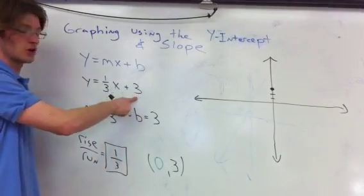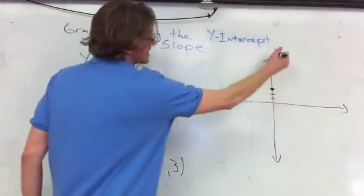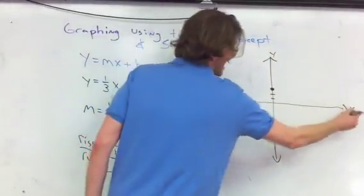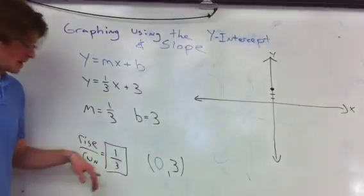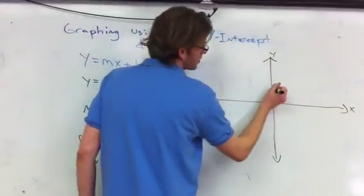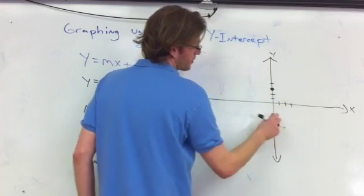B is where the graph crosses the y-intercept, the graph crosses the y-axis at three, and now we have to rise one and run three. So rising one, we go dot dot dot dot dot, rise one, and we have to run three.